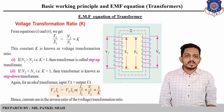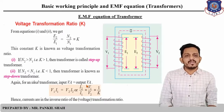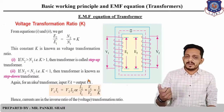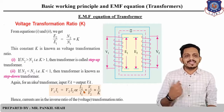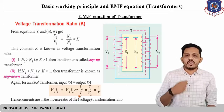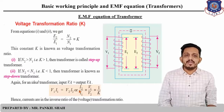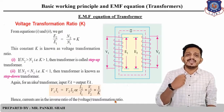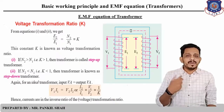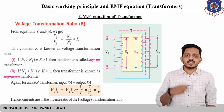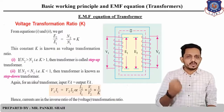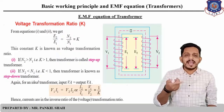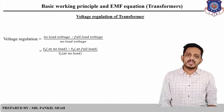For an ideal transformer, input power equals output power. So V1·I1 = V2·I2. Taking the ratio V1/V2 = I2/I1, which equals 1/K. This is the transformation ratio in terms of current. So the transformation ratio K = E2/E1 = V2/V1 = N2/N1, and in terms of current it is I1/I2.